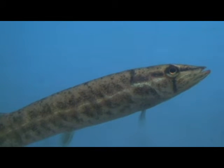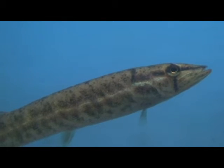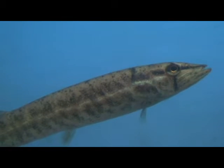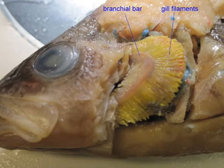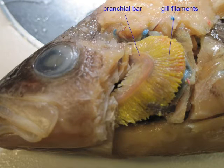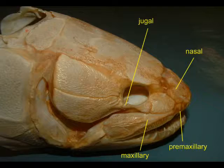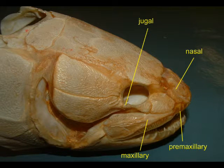In bony fish, water enters through the mouth and then passes through the opercular cavity where the gills are located before passing out from underneath the gill cover or operculum.